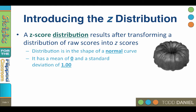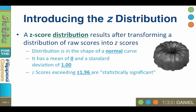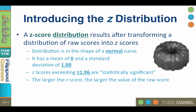This is what makes z-scores comparable across different distributions. A z-score of positive 1.45 is also 1.45 standard deviations above the mean. Z-scores exceeding positive or negative 1.96 are statistically significant, and exactly 95% of scores fall between z of positive and negative 1.96. The farther a z-score is above the mean, the larger the raw score, and the further below the mean, the smaller the raw score.